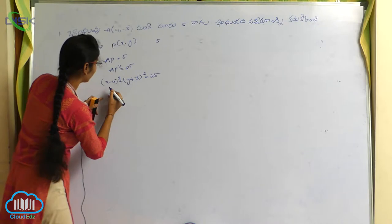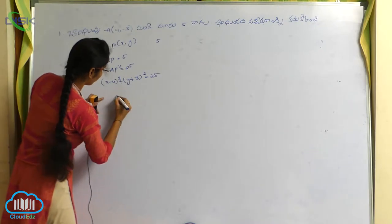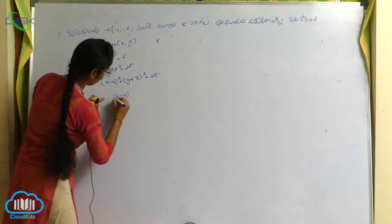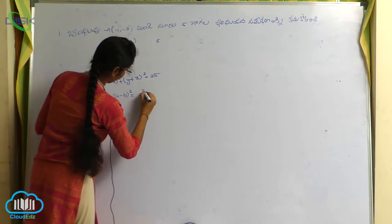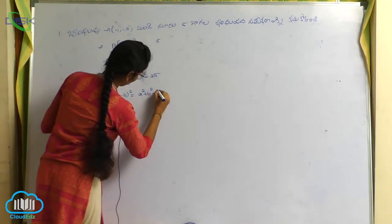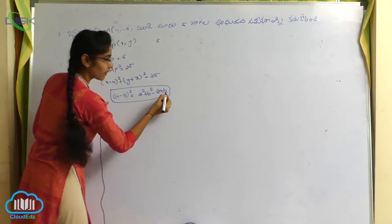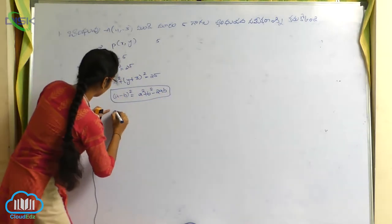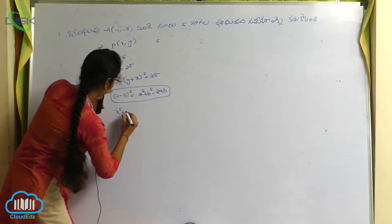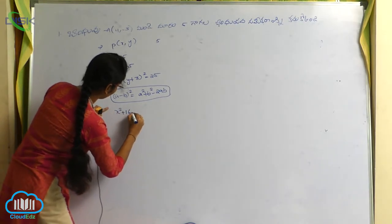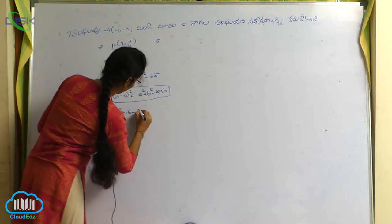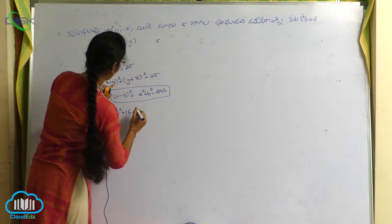A minus b whole square formula lo undi. Ayate apadu a minus b whole square means a square plus b square minus 2ab. Ok, a square, x square plus b square anute 4 square, 16 minus 2ab, 2 into 4, 8, 8x.